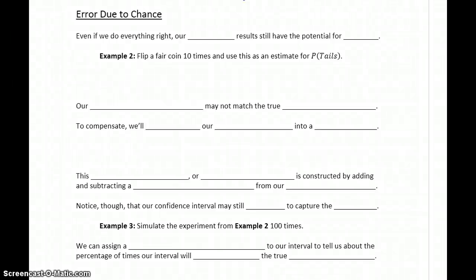Our sample data can be plagued by bias, but even if we take all the appropriate measures to minimize that as much as possible or even potentially eliminate it altogether, then our sample data, our sample results, still have the potential for error. And this error comes from simply error due to chance.